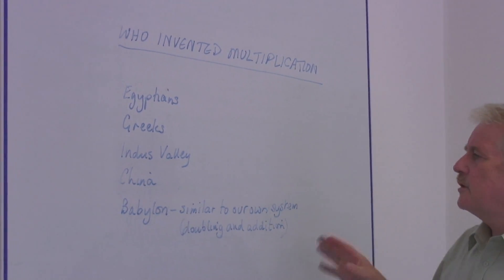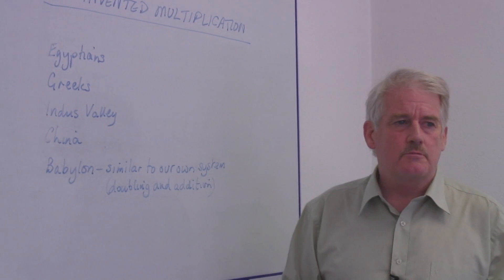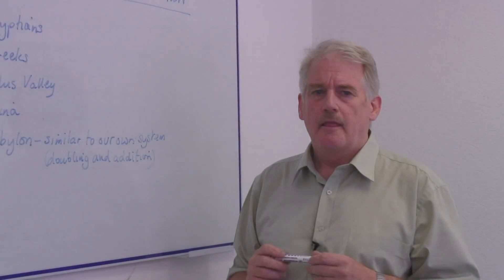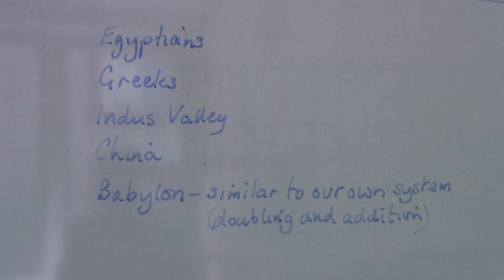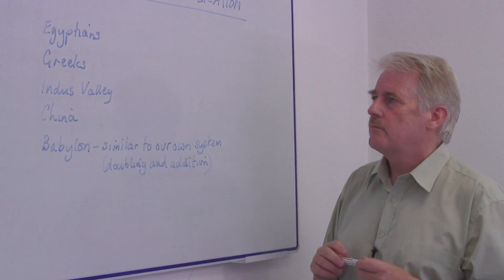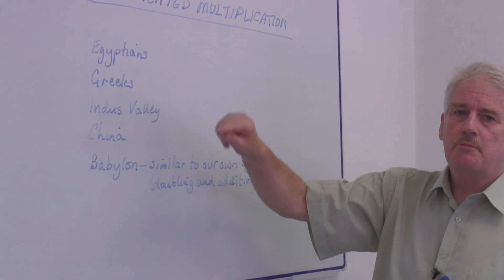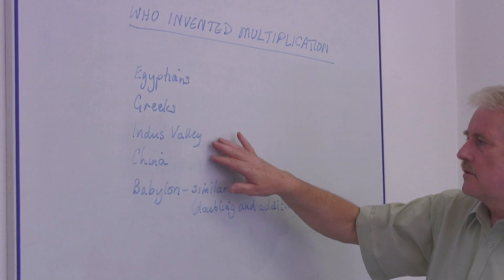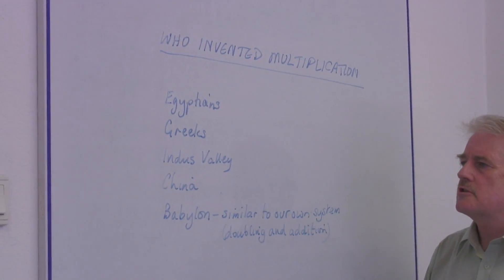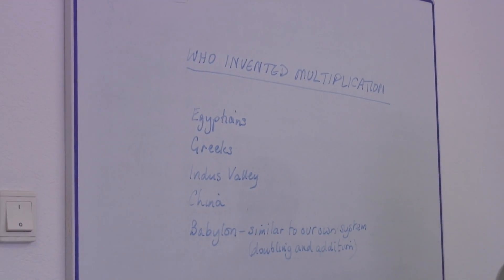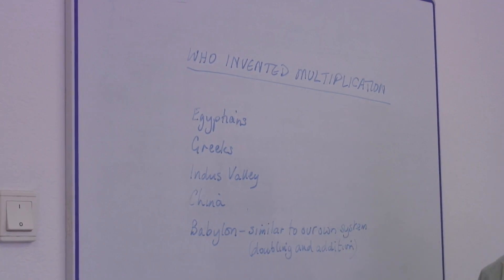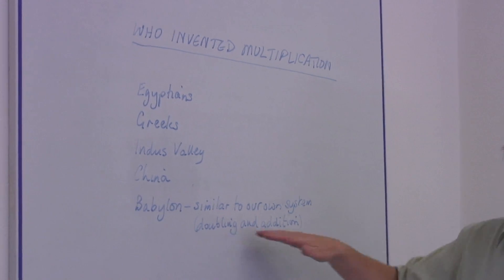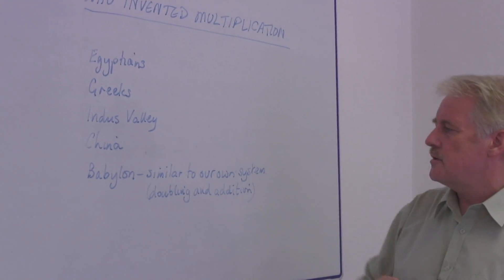The problem is that there are formal systems of multiplication, and these appear to begin in Babylon, which produced a system similar to our own. Of course, the Egyptians used multiplication, the Greeks, and mathematicians in India and China also. But a formal system where they use multiplication in the way that we do was only seen in Babylon.